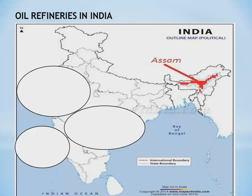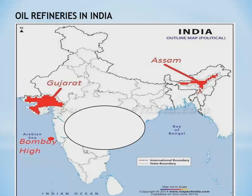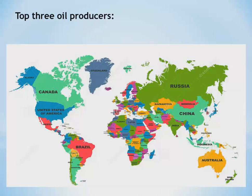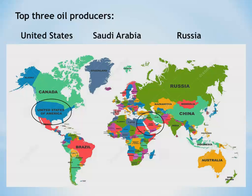Oil refineries in India are found in Assam, Gujarat, Bombay High, and the river basins of Godavari and Krishna. The top 3 oil producers in the world are the United States, Saudi Arabia, and Russia.